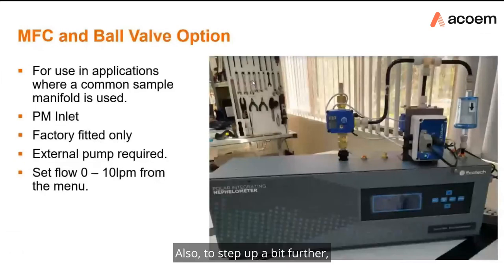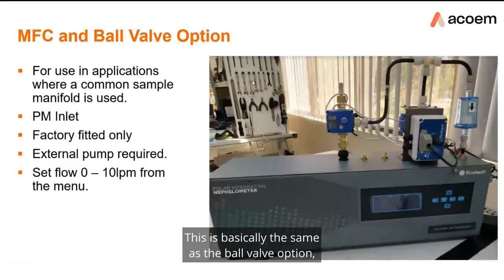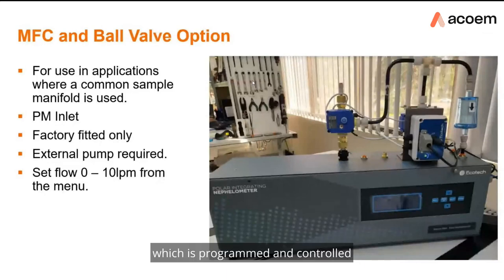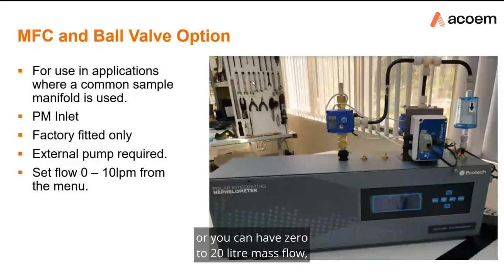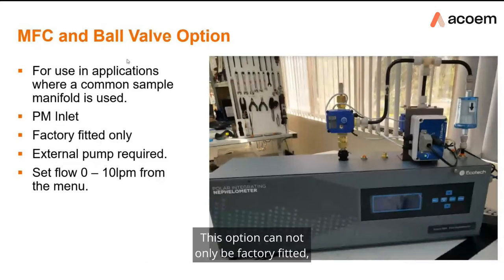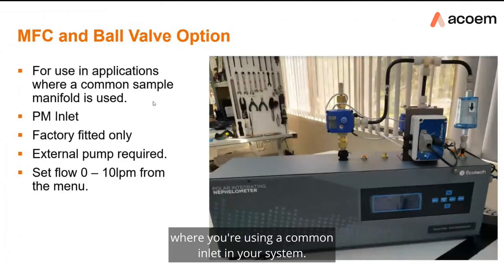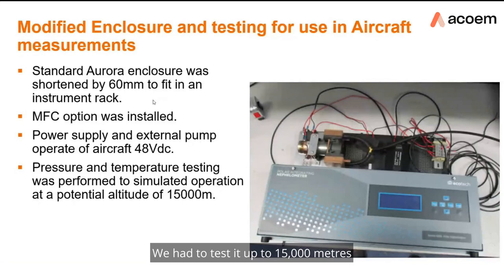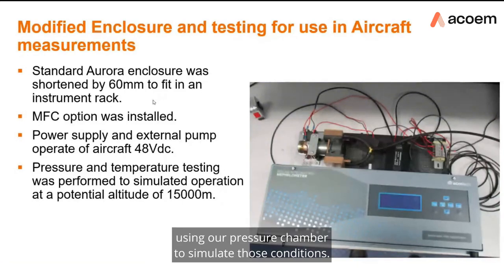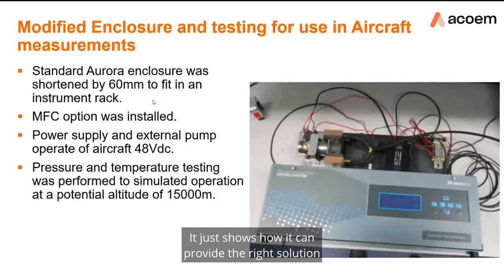A further step up is the MFC and ball valve option, which is similar to the ball valve option but includes an internally installed mass flow controller programmed and controlled by the Aurora nephilometer itself through the front menu. You can set the flow between 0 and 10 liters per minute, or 0 to 20 liters per minute if desired. This option is factory-fitted only and is ideal for matching flows with other instruments on a common inlet. An example was an Aurora 4000 designed to fit in an aircraft fuselage, tested in a pressure chamber to simulate 15,000-meter altitude conditions.